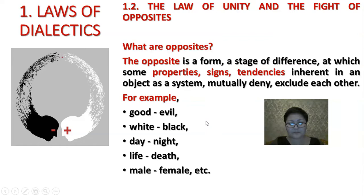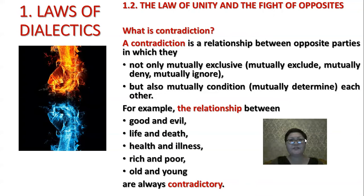What is contradiction? If opposites are a quality of material things and phenomena, contradiction is always a relationship between opposite parties in which they not only mutually exclude, mutually deny, and mutually ignore, but also mutually condition and mutually determine each other. For example, the relationship between good and evil, life and death, health and illness, rich and poor, old and young are always contradictory.